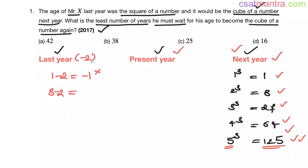8 minus 2, that is 6. Now, this 6 should be the square of a number. It is mentioned that last year's age was the square of a number. 6 is not a square of any number, so ignore it.